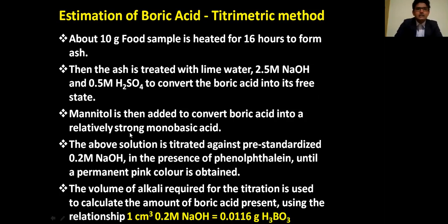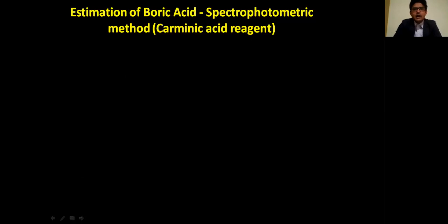Next is the estimation of boric acid by spectrophotometric method. In the spectrophotometric method we are going to use caraminic acid reagent. Here are the steps for estimation of boric acid using the spectrophotometric method.